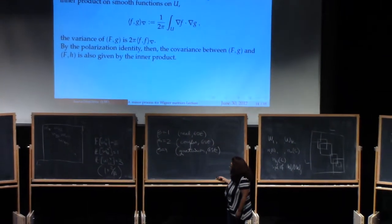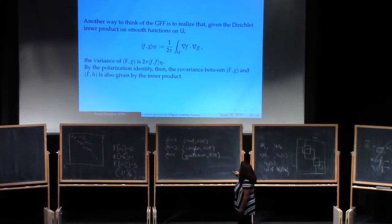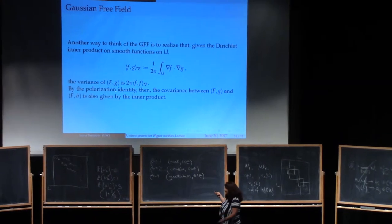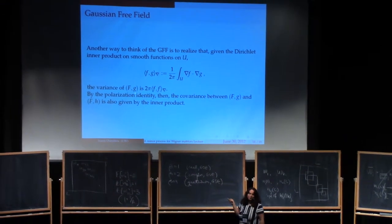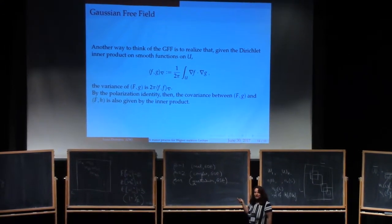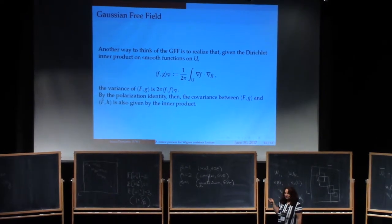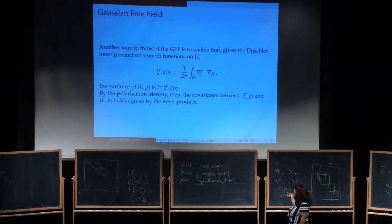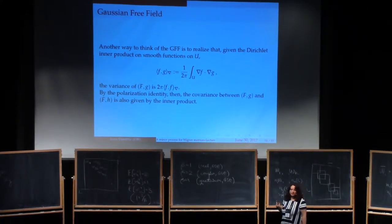Yes? Sorry. Yes, you're completely right. This should be the Gaussian free field on F, not on G. Thank you. Okay, so the polarization identity will then give you that the covariance between two different Gaussians is also given by the inner product.